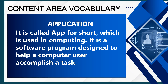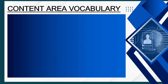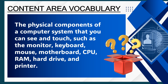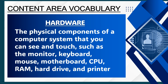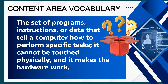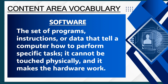Hardware is the physical components of a computer system that you can see and touch, such as the monitor, keyboard, mouse, motherboard, CPU, RAM, hard drive, and printer. Software is the set of programs, instructions, or data that tell a computer how to perform specific tasks; it cannot be touched physically, and it makes the hardware work.